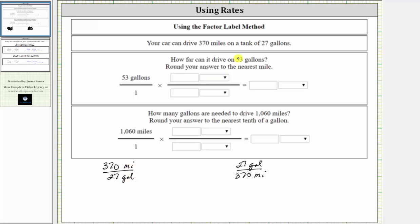So we write 53 gallons as a fraction with the denominator of one as shown here. Then we multiply by the rate of 370 miles per 27 gallons. Notice gallons will simplify out, leaving us with the units of miles, which will tell us how far the car can drive on 53 gallons of gas.